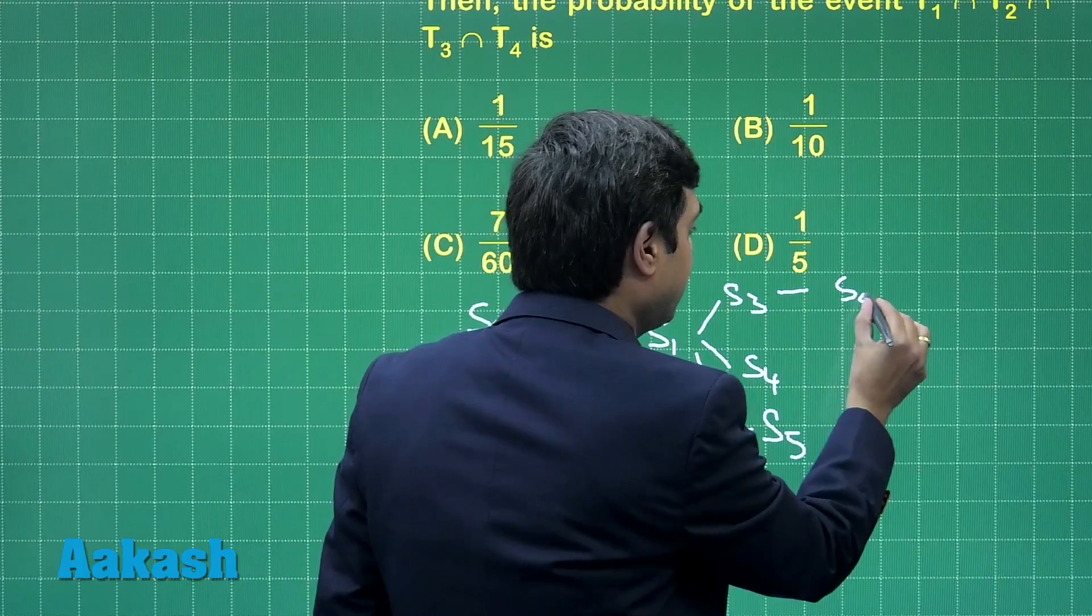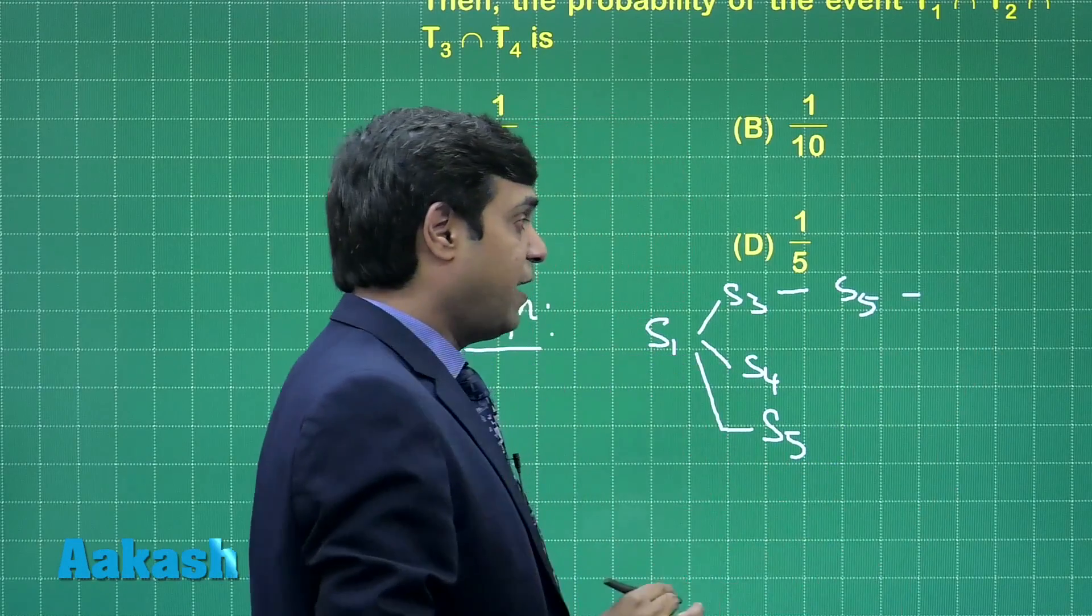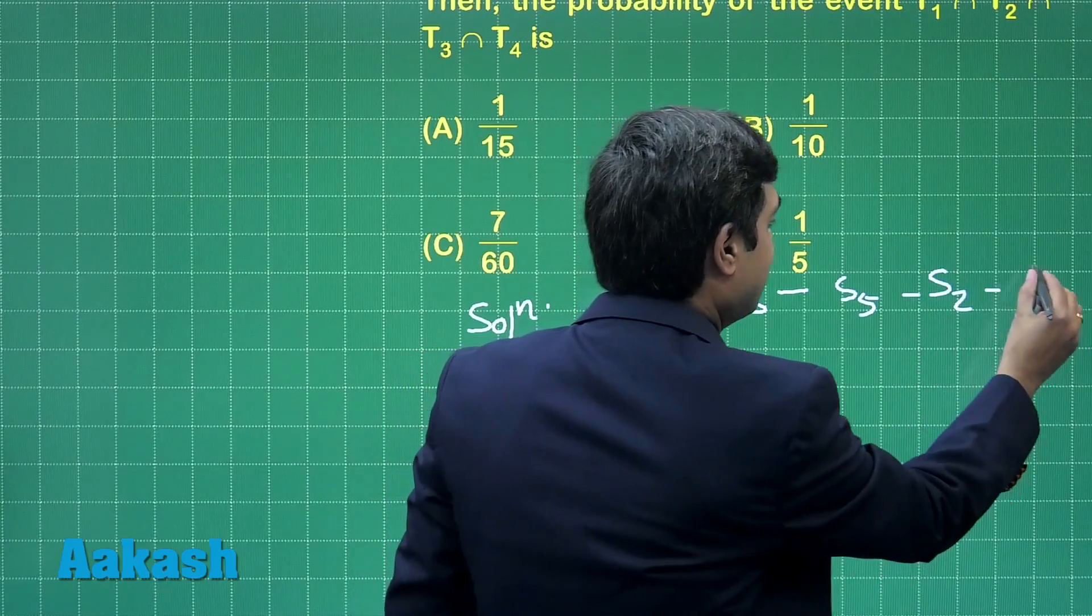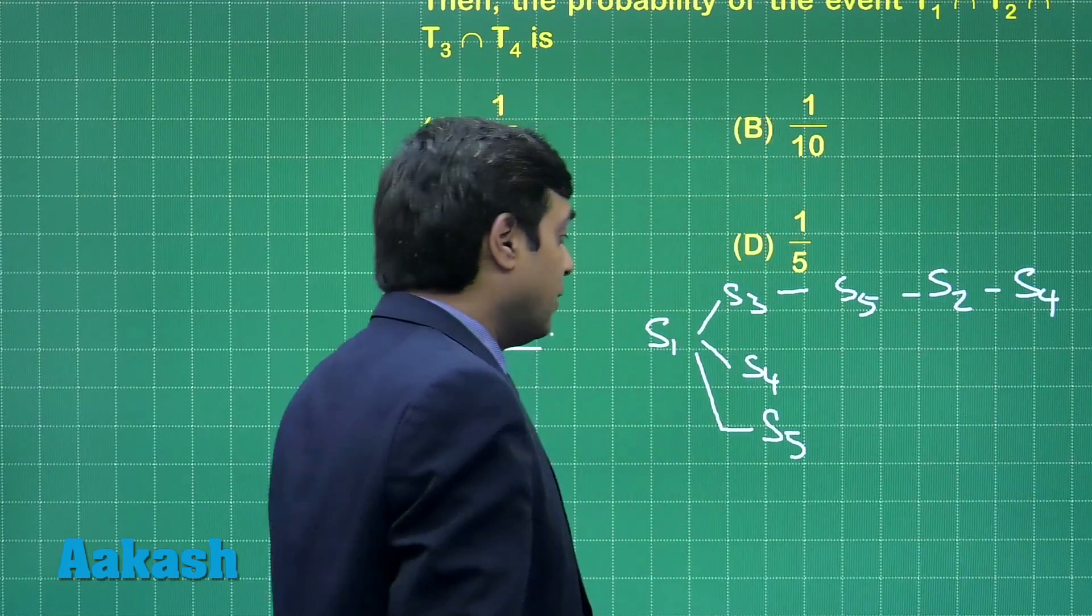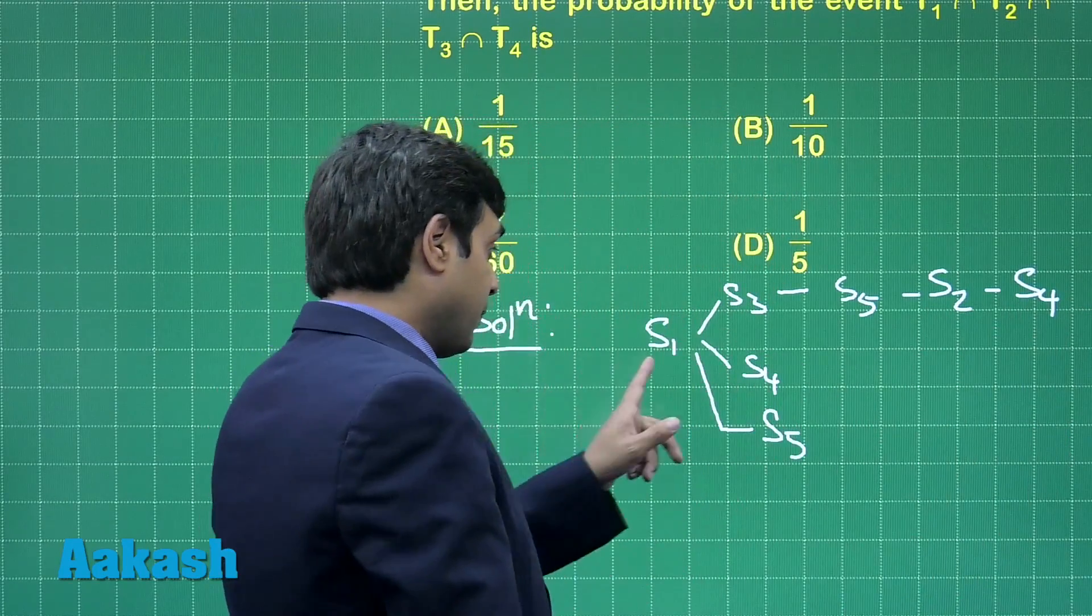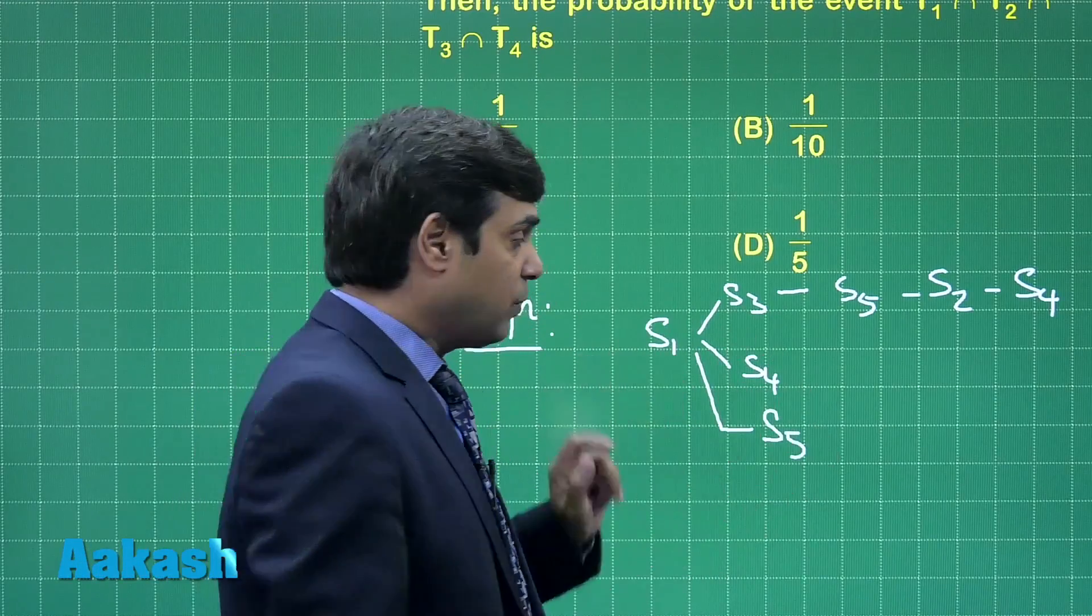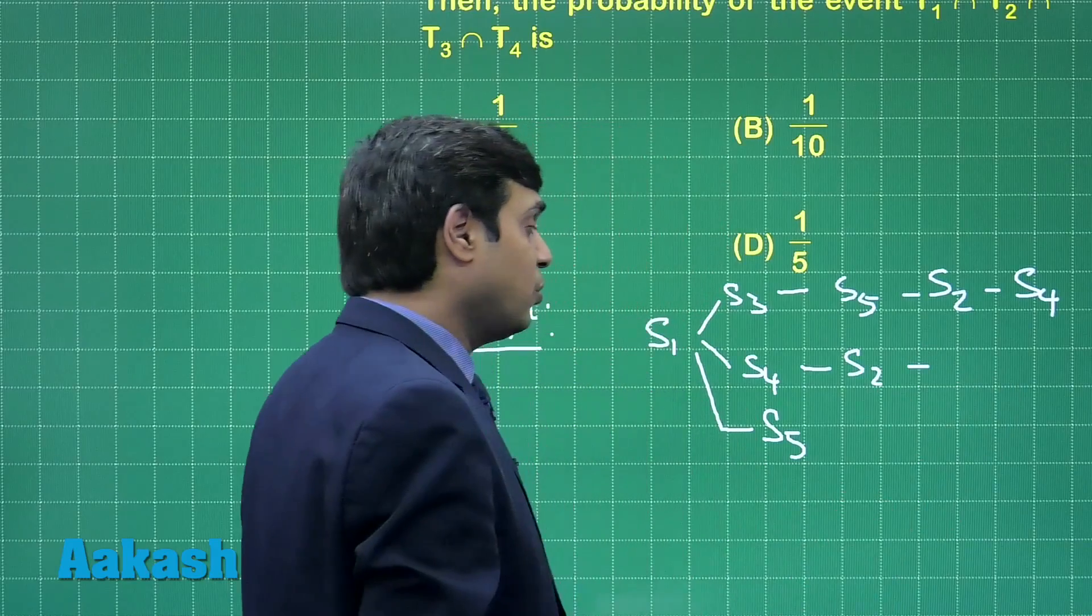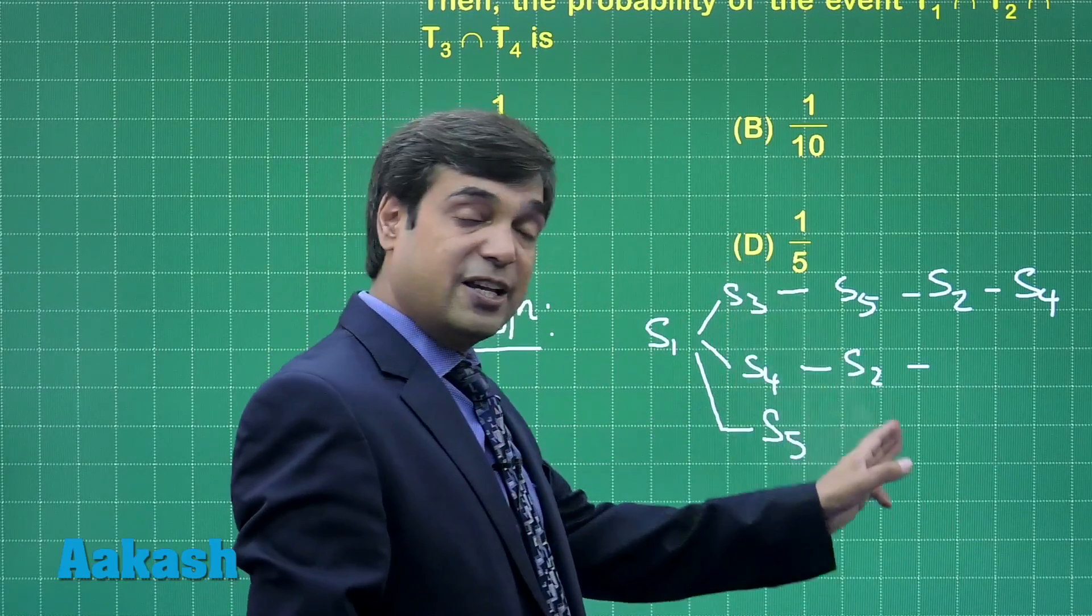Clearly it will give you S5. With S5, S4 is not possible. So next would be S2 and the next is S4. With S4, S3 and S5 not possible. So simply S2.